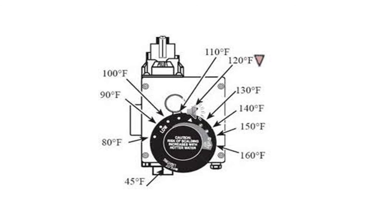An electric water heater thermostat tells the heating elements when to heat up. Most electric hot water tanks have two elements and two thermostats. The elements do not heat up at the same time — the top element heats the water first, and then the bottom element kicks in. The upper thermostat acts as a coordinator between the two elements. When the water in the top part of the tank is hot enough, it lets the lower thermostat go into action. When the lower thermostat senses the water is too cool, it turns on the lower element.